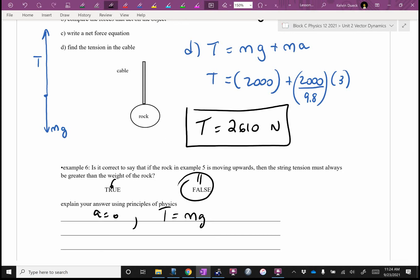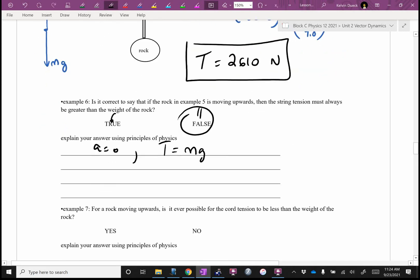Example seven. I've just told you that it can be equal to MG. Is it possible for the rock to be moving upwards and for tension to be less than MG? Once again, we're going to vote. Once again, how high you hold your hand up is how sure you are of the answer. So can you be moving upwards and have tension be less than MG? Who says, Mr. Dewitt, this is easy. Yes, of course you can be moving upwards and have tension less than MG.